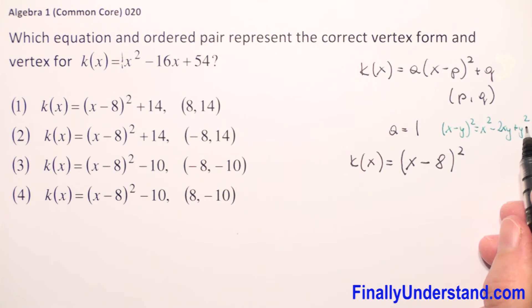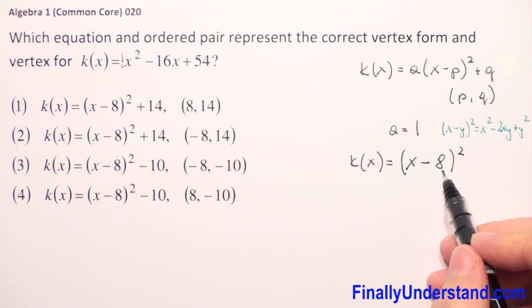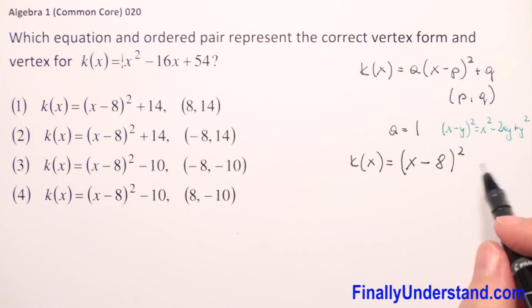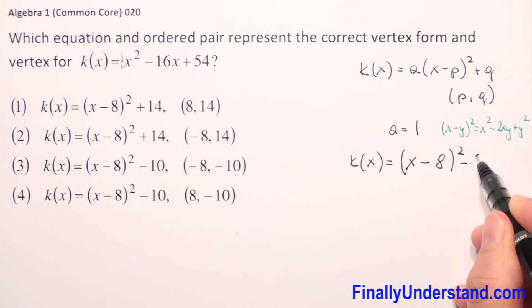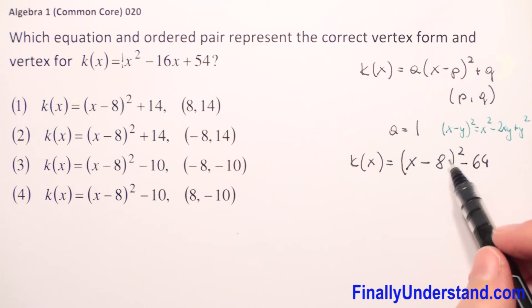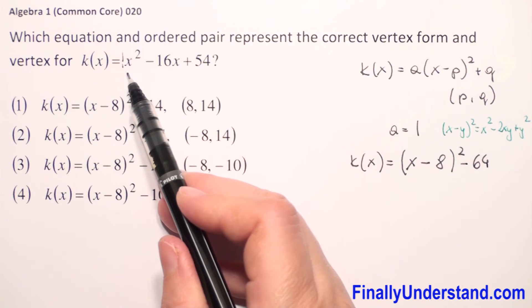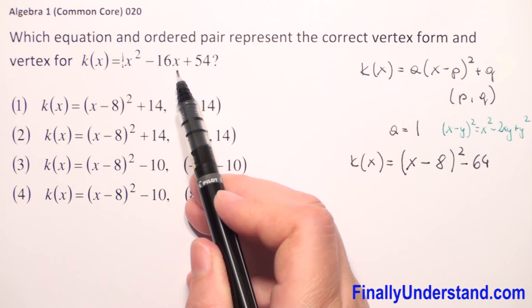And we have plus y squared. So 8 to the second power is 64. So what first we have to do? We have to subtract the 64 because we don't need the 64. We need to have only x² - 16x.